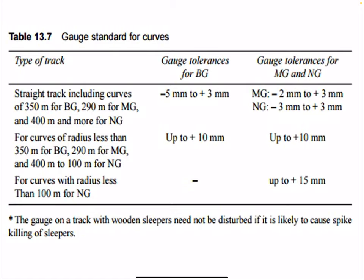In Table 13.7, standards for curves are specified with gauge tolerances for broad gauge, meter gauge, and narrow gauge. For example, for curves of radius less than 350 m for broad gauge, 290 m for meter gauge, and 400 m to 100 m for narrow gauge, the gauge tolerance for broad gauge can be up to 10 mm. Overall in this video lecture, we have talked about the necessity of geometric design, different types of gradient, grade compensation on curves, and widening of gauge on curves — all important considerations when designing the geometry of a railway line. Thank you.